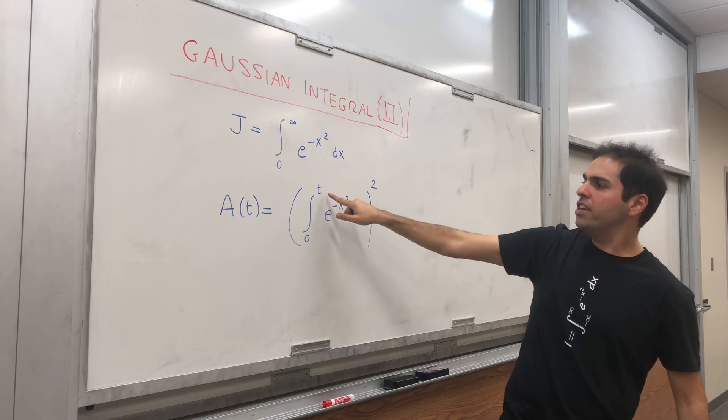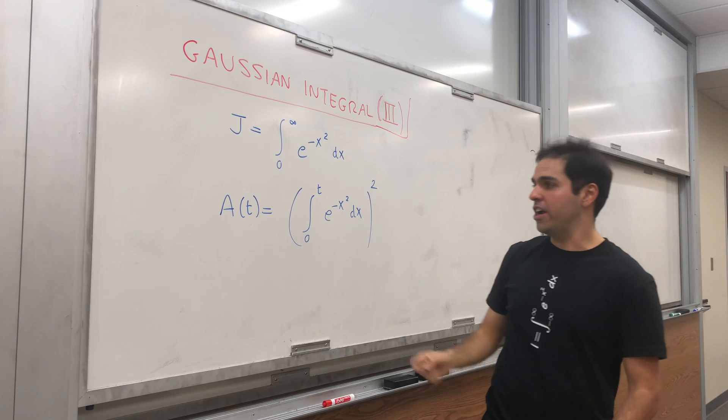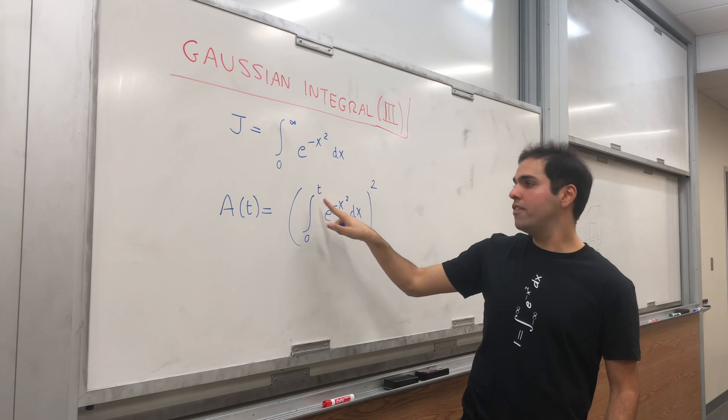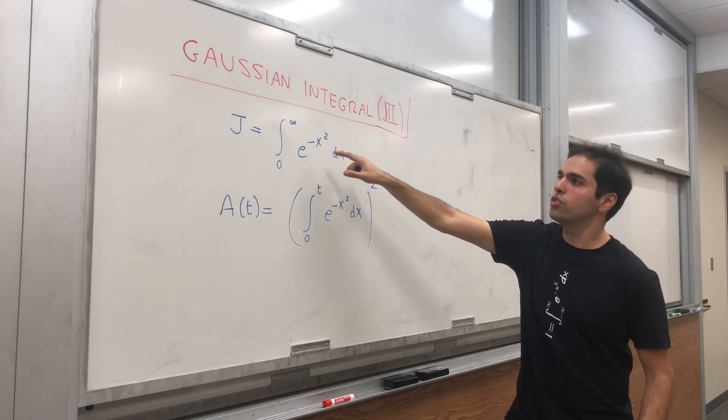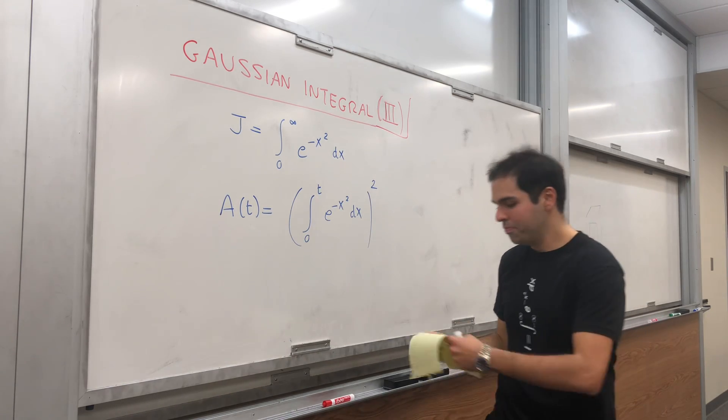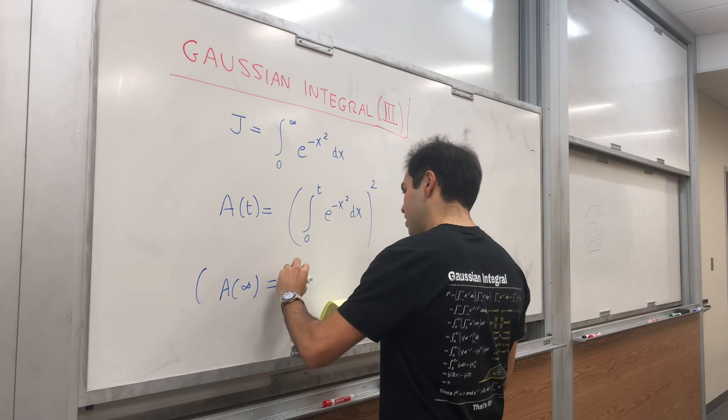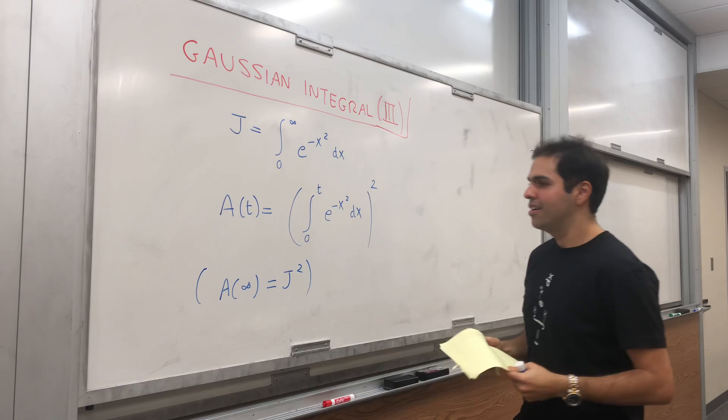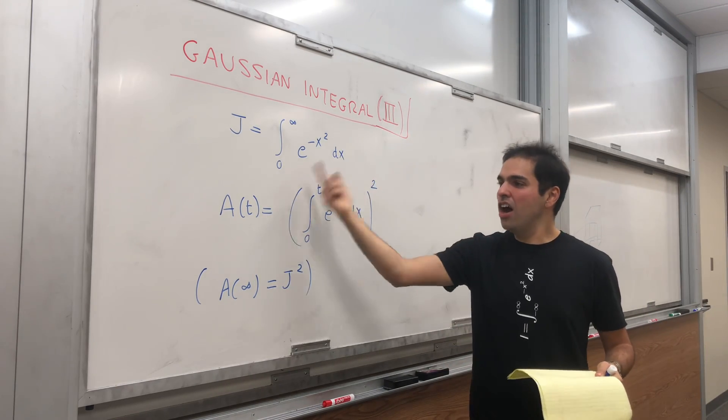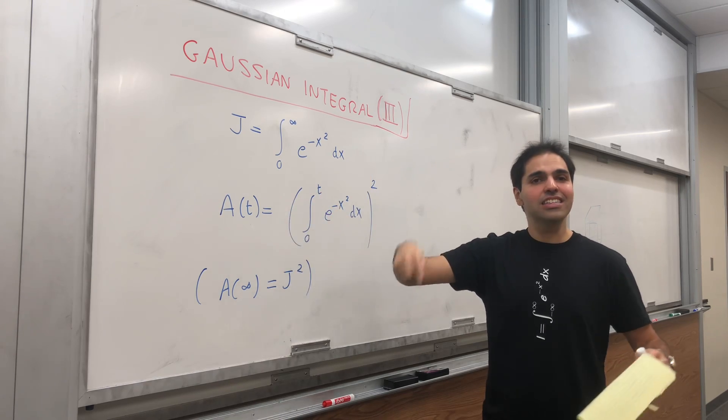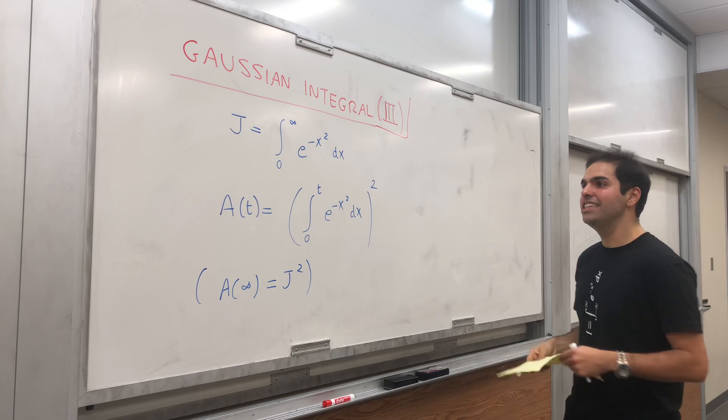So how are A and J related? Well notice if you plug in t equals to infinity here, you get j squared. Because you get the integral from 0 to infinity of whatever we want squared, so it's just this squared. So A infinity equals to j squared. So in particular what we would like to do, we would like to find another way of calculating A, so another formula for A of t, and then we'll just plug in t equals to infinity.